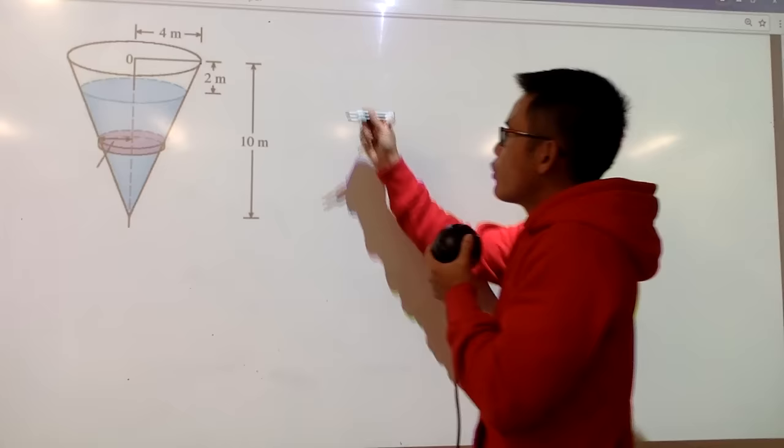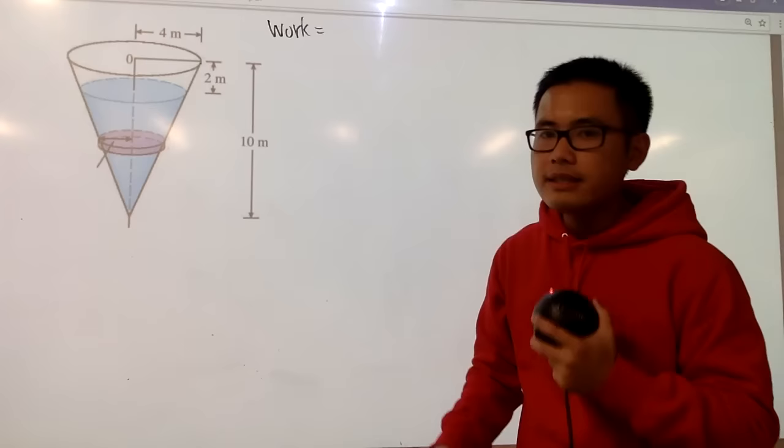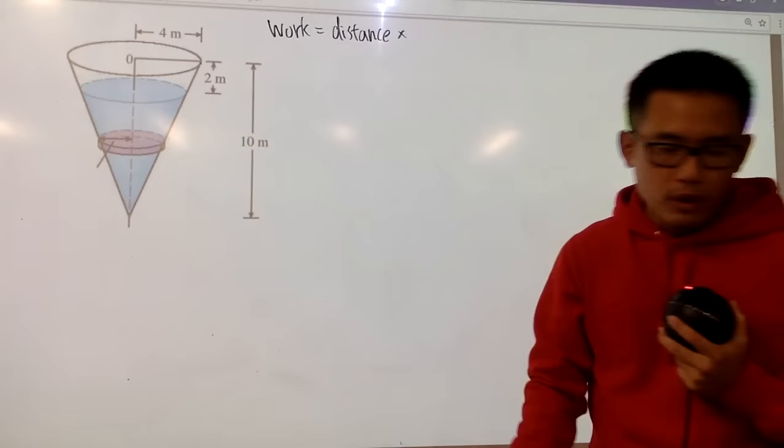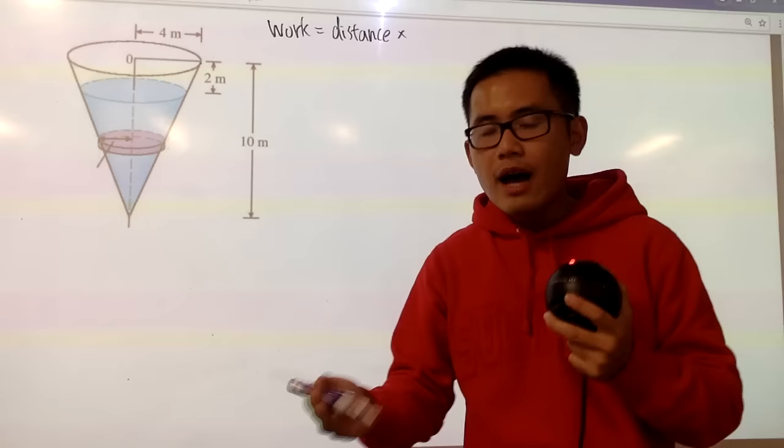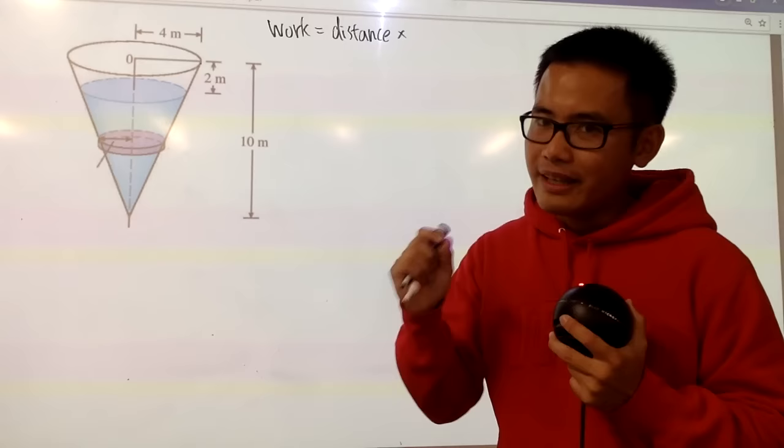First of all, of course, I have to know what is work, and we know that work is defined to be force times distance. Let me write down the distance first. So it's distance times force. And what is force? Force is just pretty much like the weight. And now, how do we calculate weight? We have to care about two main things: the first thing is the density, and the second thing is the volume.